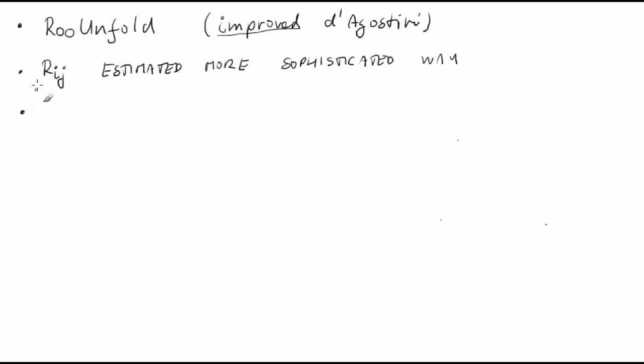Also, the number N sub i is not used directly in the unfolding formula, but rather a Bayesian estimate of the expectation value mu sub i hat.